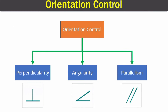In this video, we're going to learn about orientation controls in GD&T. In orientation, we have three types of controls: perpendicularity, angularity, and parallelism. These controls are given along with their symbols. Now let's discuss them one by one.